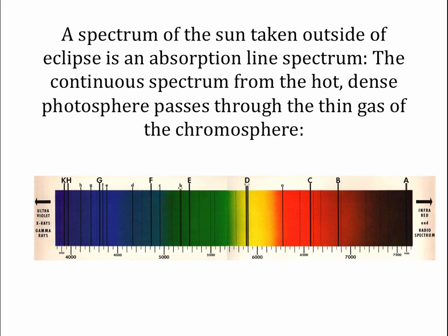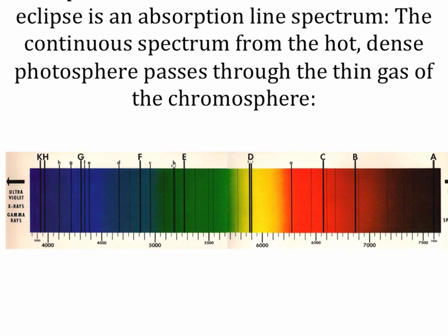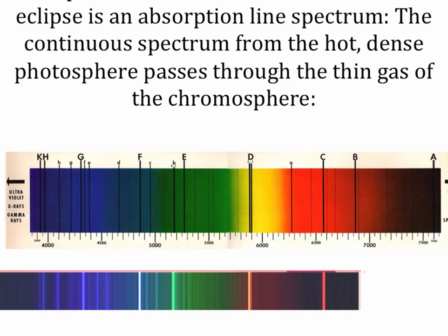If we take a spectrum of the sun when it's not in an eclipse, we see an absorption line spectrum. That's because the continuous spectrum from the photosphere passes through the thinner gas of the chromosphere on its way to us, and the gas in the chromosphere absorbs light at the frequencies corresponding to the gas that's there. The dark lines in the solar spectrum were first noticed by an astronomer named Fraunhofer, and so they're often called the Fraunhofer lines. If we compare this absorption line spectrum of the sun to the emission line spectrum of the chromosphere, we see that most of the lines match up — the emission lines in the chromosphere match exactly with the absorption lines seen in the light coming from the photosphere.